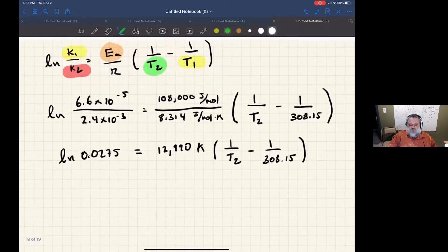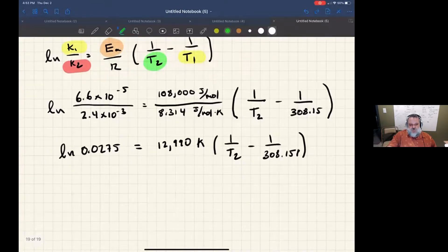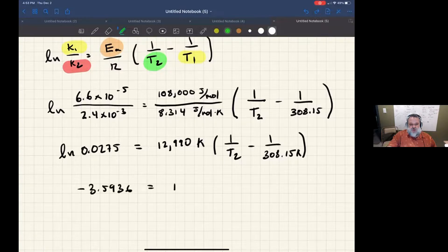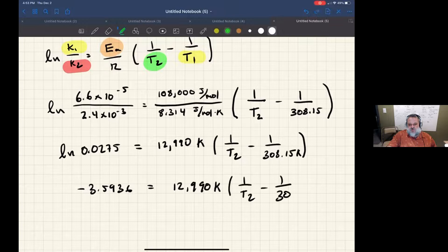So simplifying a little bit more, I get the natural log of this value is minus 3.5936. And I'm going to go ahead and carry along the right side of the equation.